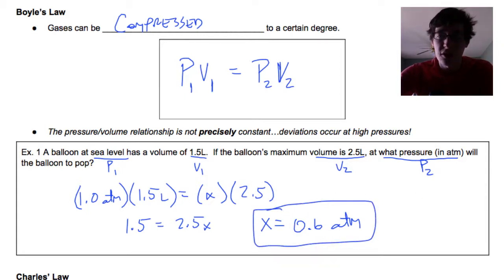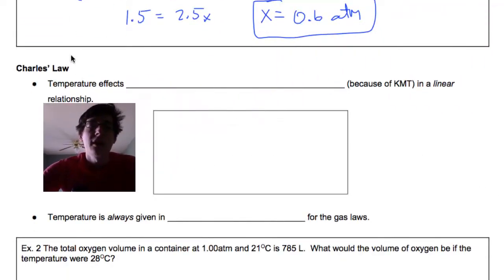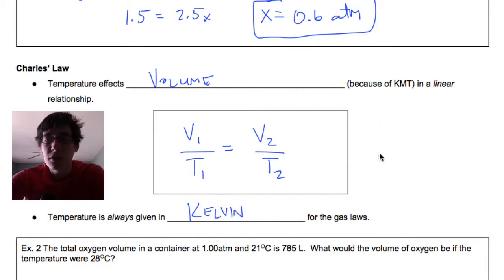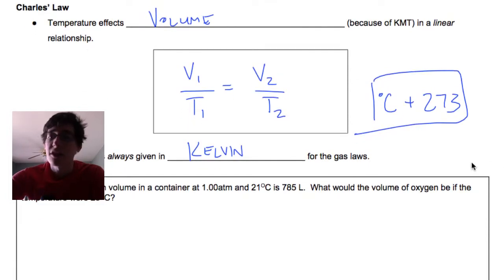Very simple, the pressure volume relationship. Charles law is the second one, and this is how temperature affects the volume of a container or of a gas because of the kinetic molecular theory. We can write this one as V1 over T1, so volume over temperature is going to be in a relationship with V2 over T2. Temperature, this is something new, is always given in this unit called Kelvin. To find Kelvin, we do degrees Celsius plus 273. This is really important. Whenever we have a temperature, we need to convert it into Kelvin.